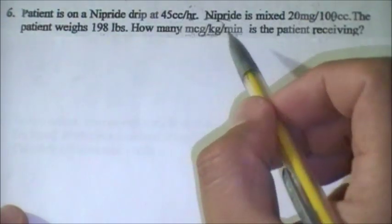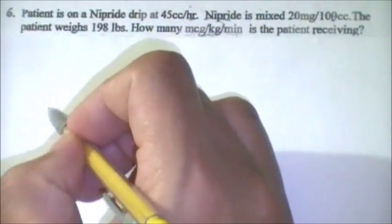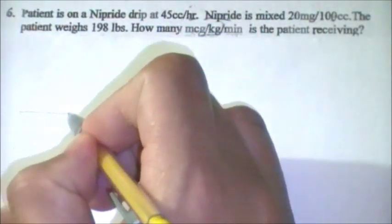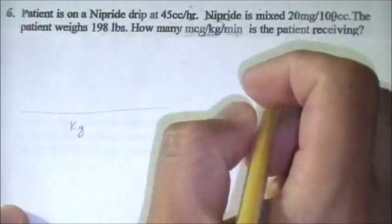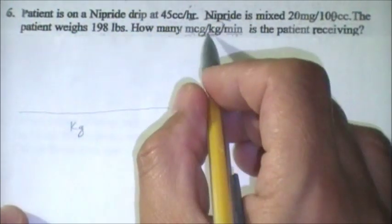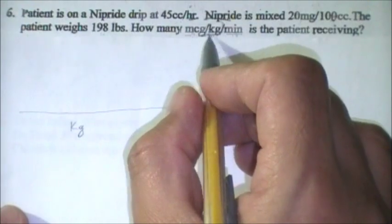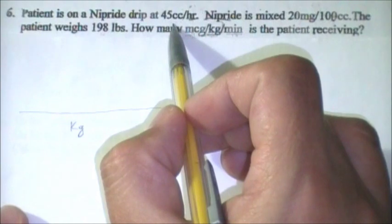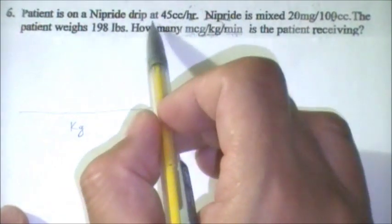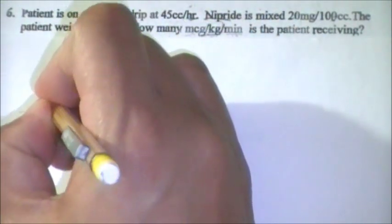In order for us to get micrograms per kilogram per minute, we have to isolate kilogram first — we have to make kilogram our main denominator. Then we work with what is ordered for the patient, which is nitropride drip at 45 mL per hour. So let's put 45 mL as our numerator and hours as our denominator.